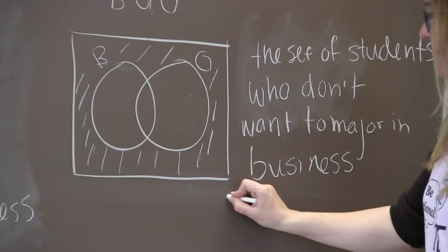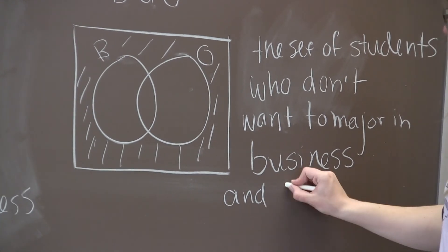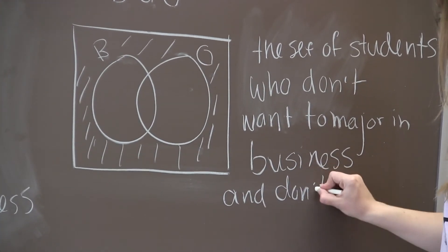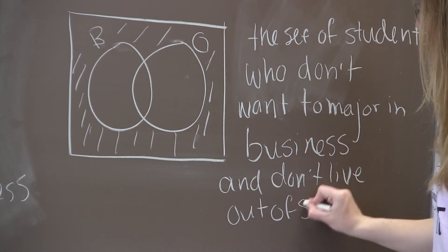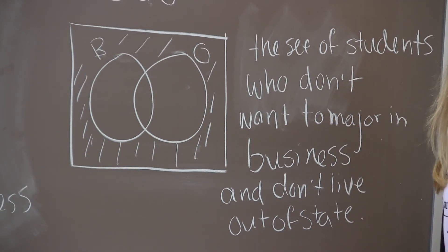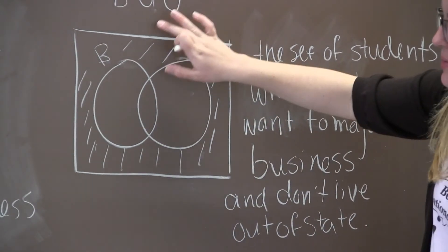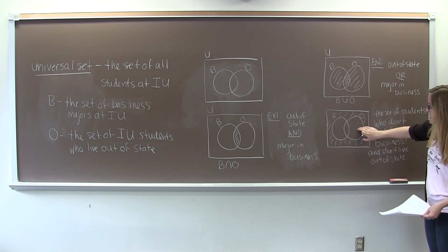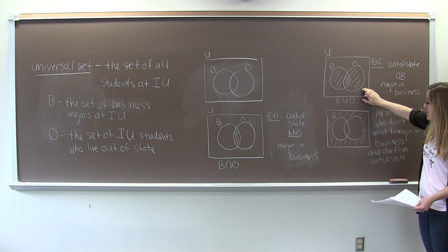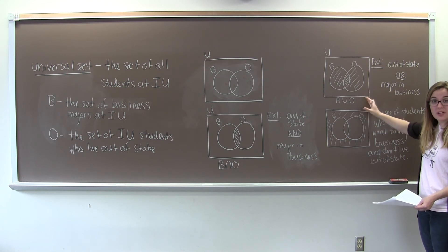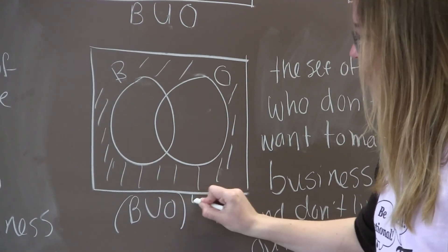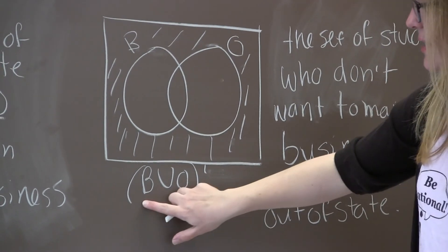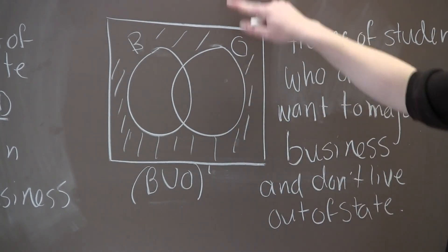So we'll describe this region as the set of students who don't want to major in business and live in state. I'll write that as and don't live out of state. But how do we write this set? How do we describe it with the unions or intersections? Well, notice that this set, everything shaded in here isn't shaded in this set, and everything shaded here isn't in this set. They're complements of each other. So the way we write this is B union O complement. This means shade in anything that wasn't shaded in here, and that's exactly what this picture does.